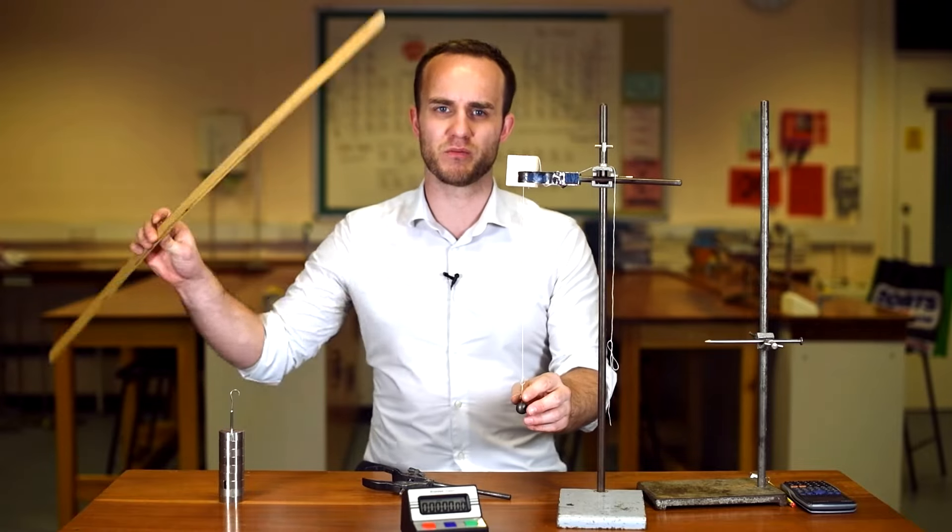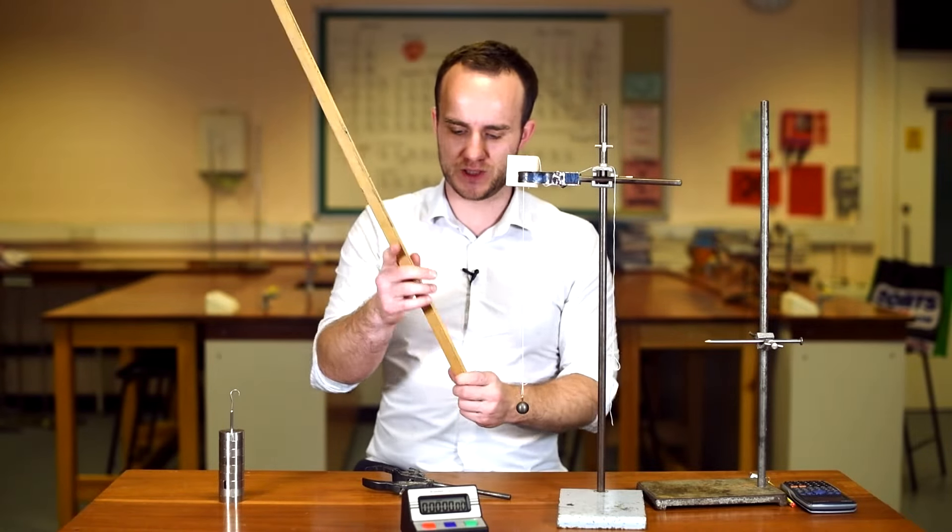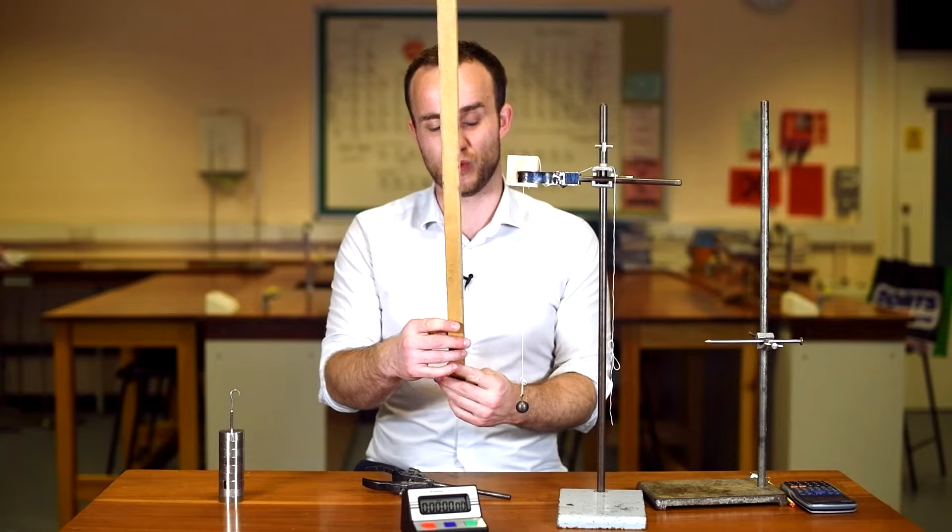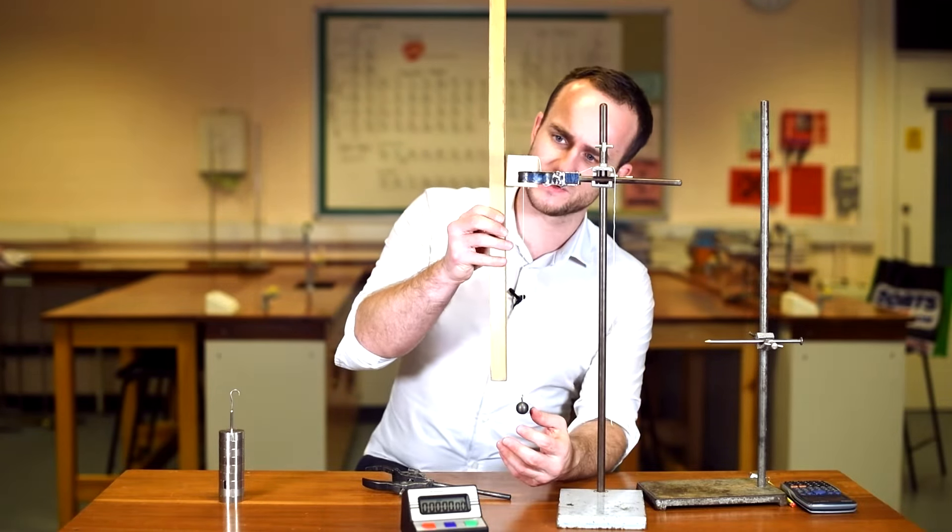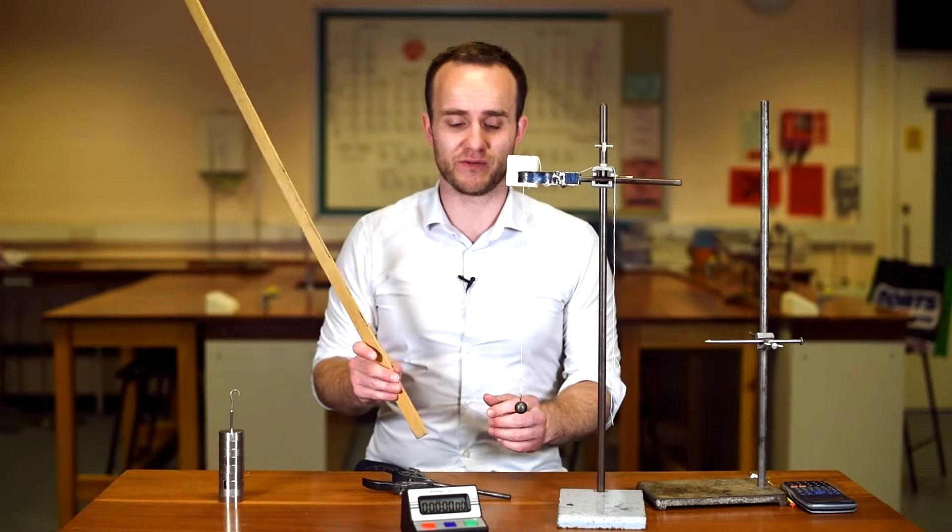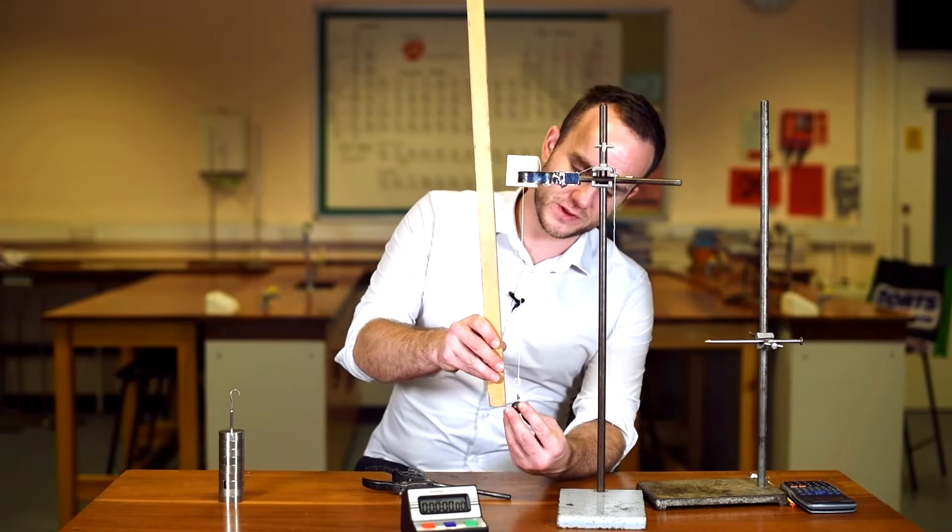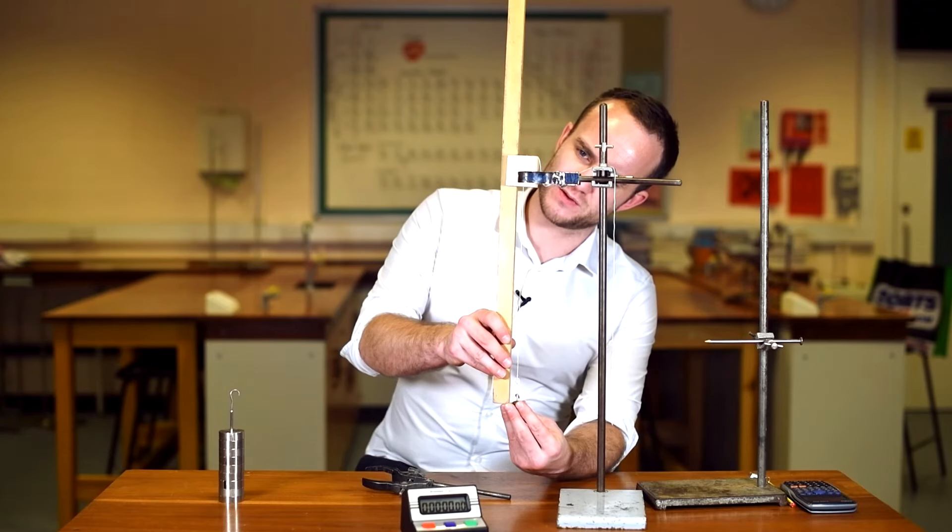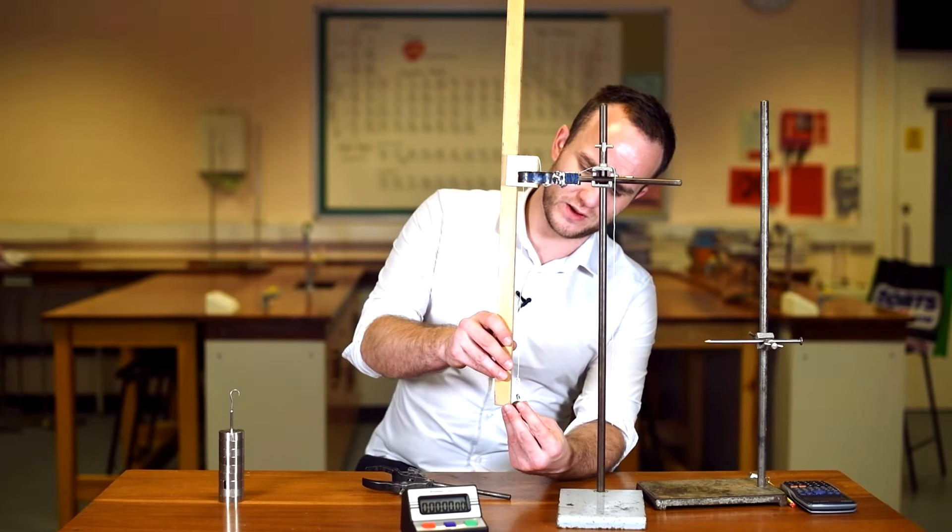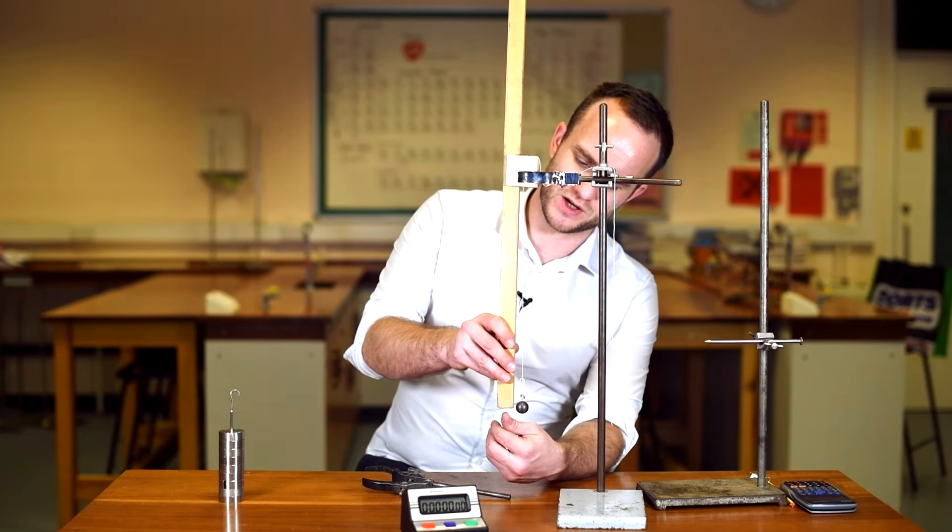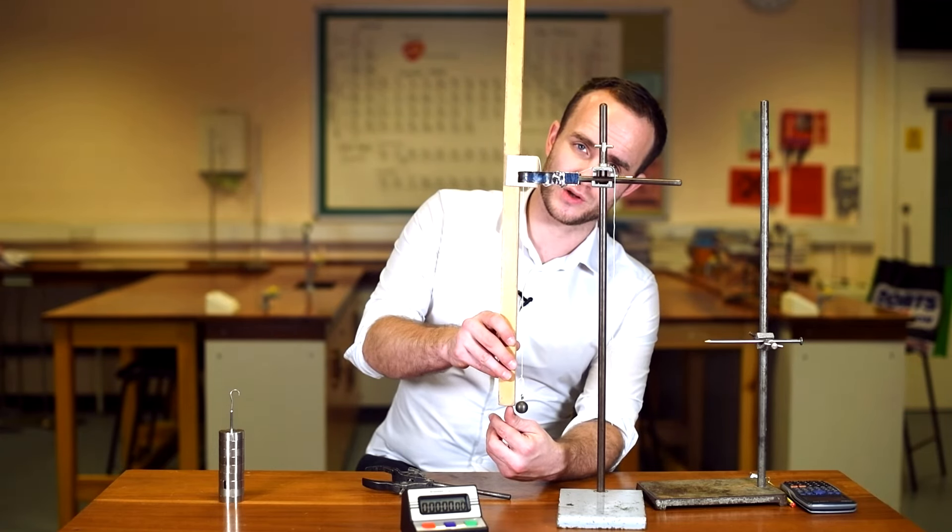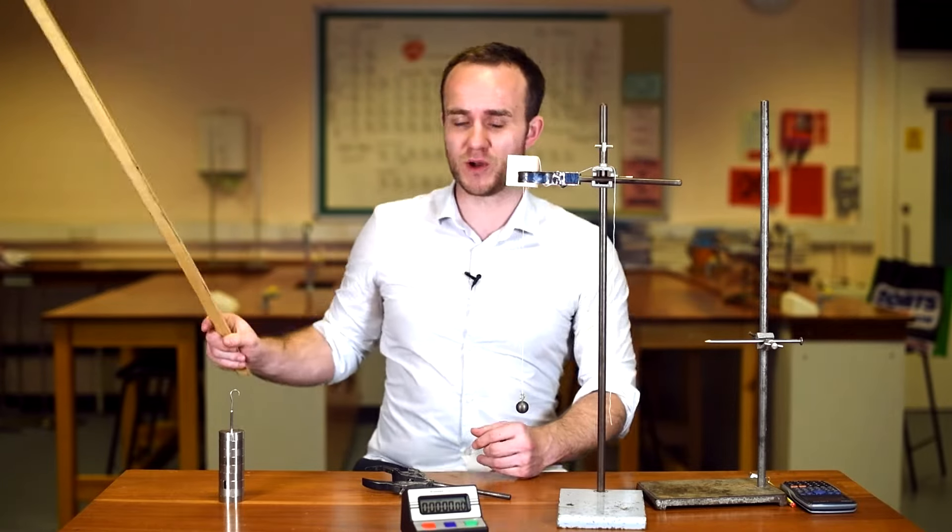When we measure this, we want to be fairly accurate, so you'll need a centimeter or one-millimeter resolution ruler. I'm going to use a meter rule here. I've got mine set up for 30 centimeters, so I'm just going to check that that's correct. Notice that I'm measuring from the bottom of the wood to the middle of the bob. That's to make sure that I'm measuring to the center of mass, not to the top or bottom of the bob.